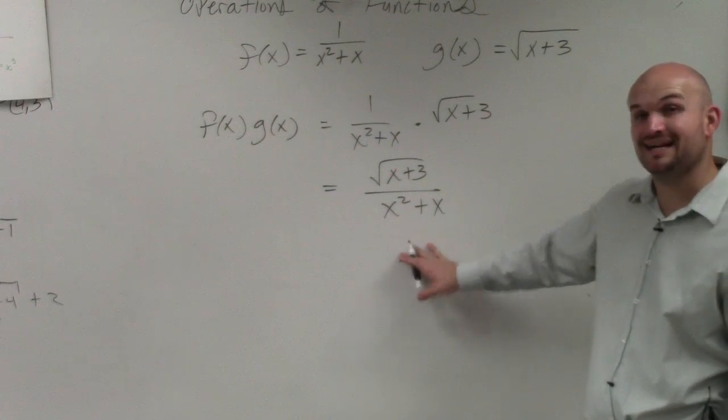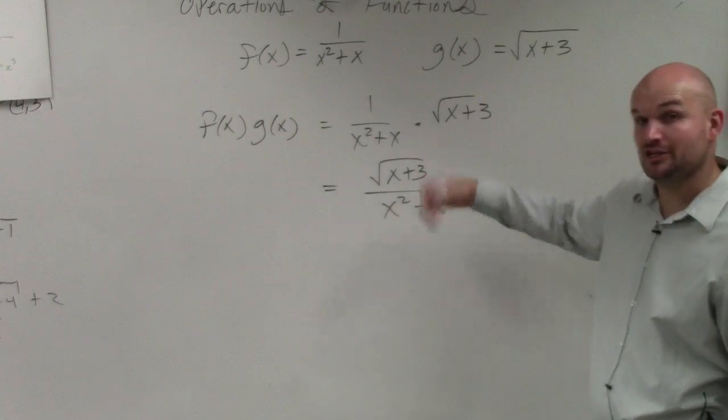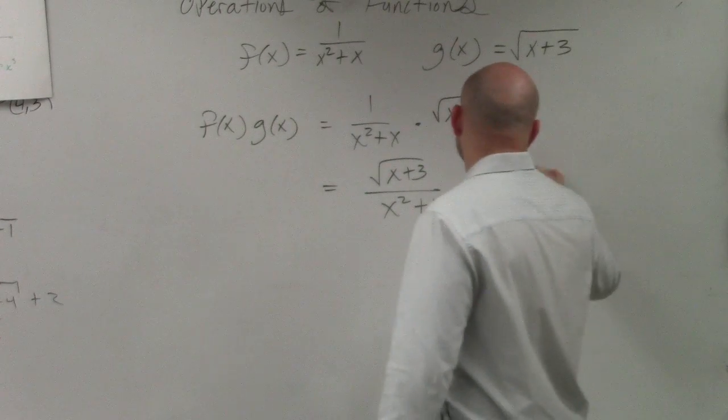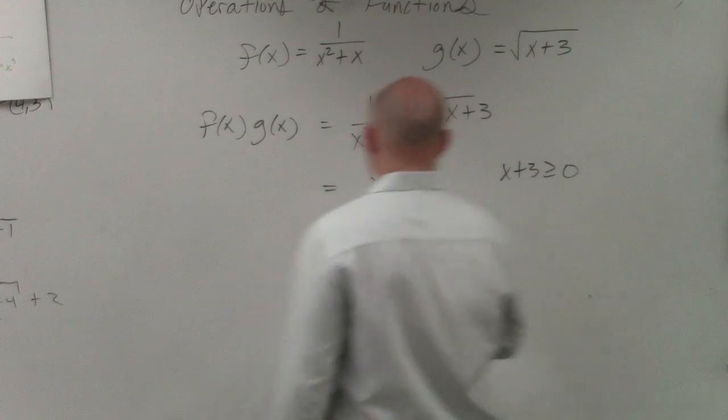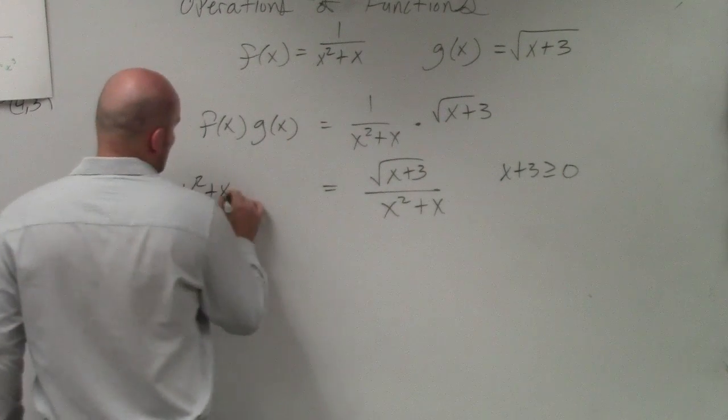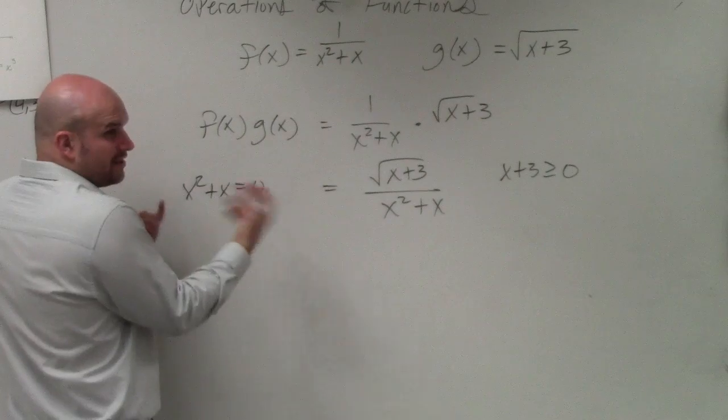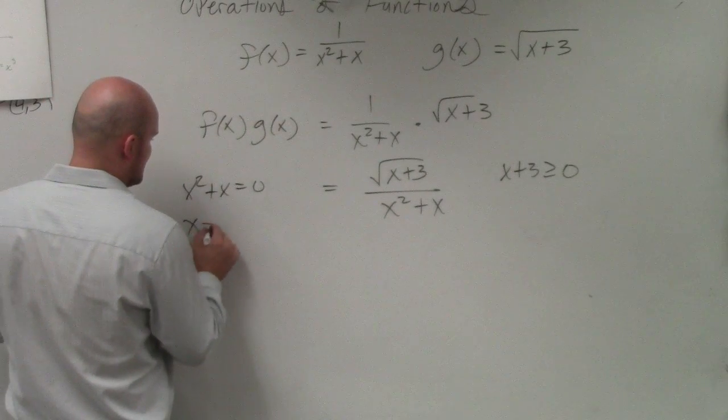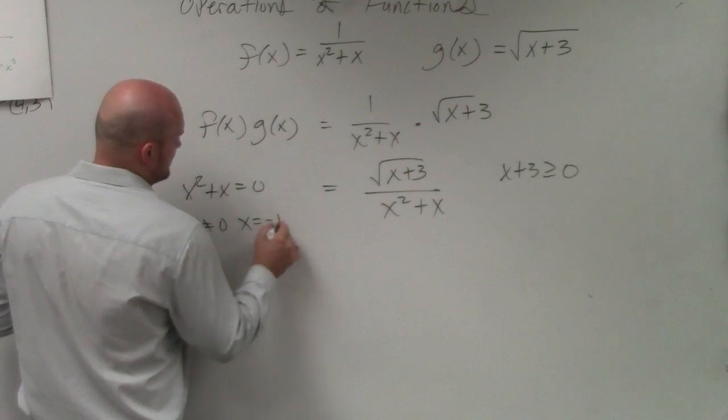Finding the domain, again, we have to look at our constraints. The constraints are the same thing as the last problem. x plus 3 has to be greater than or equal to 0. And x squared plus x equals 0. Whatever values equal 0 are not in the domain, which we know as x cannot equal 0 and x cannot equal negative 1.